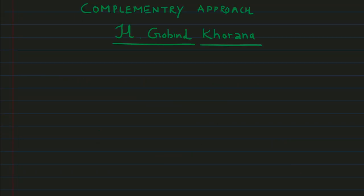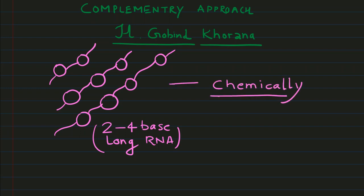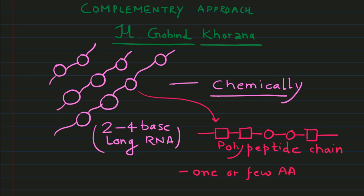The complementary approach adopted by H. Gobind Khorana included the production of 2 to 4 base pair long RNA molecules. It is important to consider that he was able to synthesize those molecules chemically. When those molecules were expressed, they produced polypeptide chains that were one or few amino acids long in repeat.